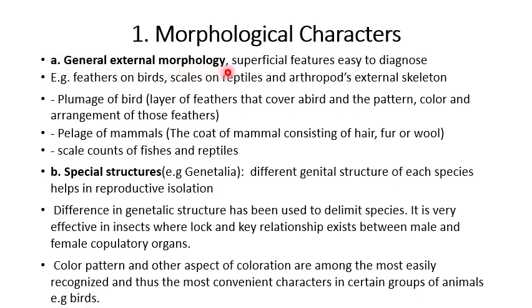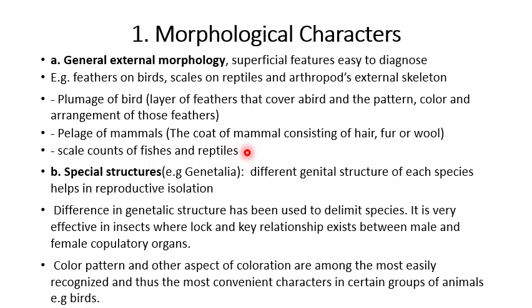General external morphology: superficial features are easy to diagnose. For example, feathers on birds, scales on reptiles, arthropod external skeletons, plumage of birds — which is the layer of feathers that cover a bird and the pattern, color, and arrangement of those feathers — and pelage of mammals, the coat of mammals consisting of fur, hair, and wool. Scales on fishes and reptiles can also be used to distinguish different animals by counting scales.